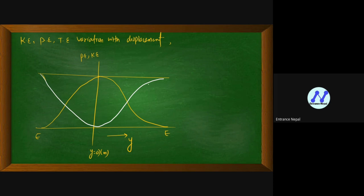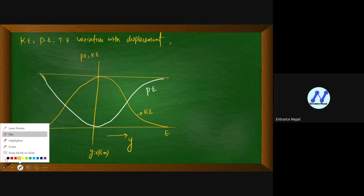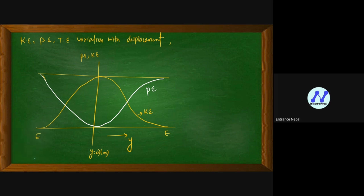This graph is for potential energy and this graph is for kinetic energy. Total energy with respect to displacement — total energy is independent of displacement. The mechanical energy is always constant; total energy does not change with displacement. Total energy is directly proportional to amplitude squared, and the total mechanical energy remains constant throughout the motion.